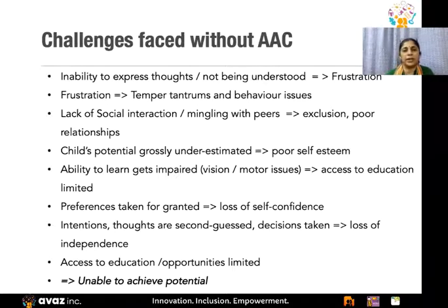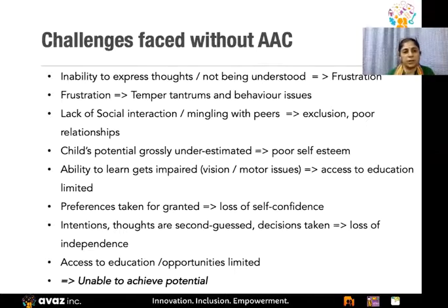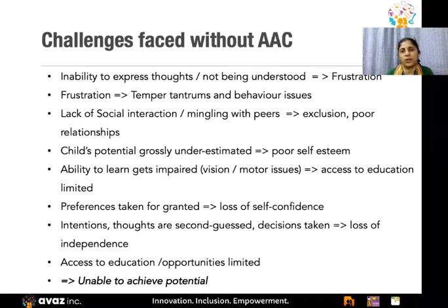The child's ability to learn gets impaired because of vision, motor, and other cognitive issues. The child's preferences get taken for granted, so others make decisions on their behalf. This leads to a loss of self-confidence, their intentions and thoughts are second-guessed, and again this leads to a lack of independence — overall the child is not able to achieve their own potential.